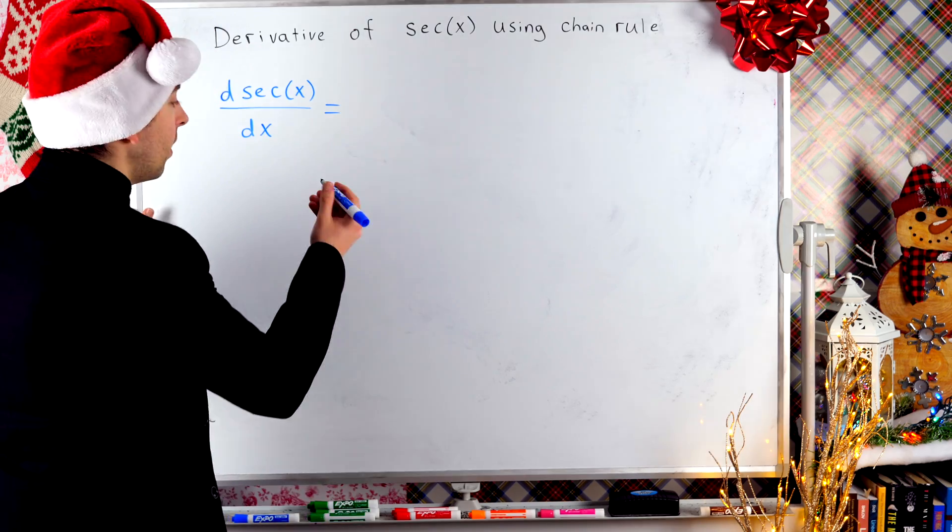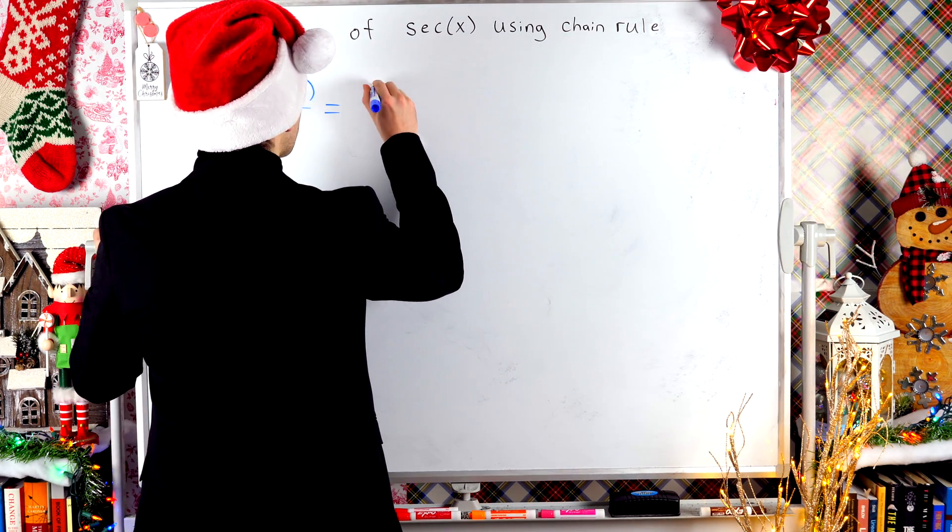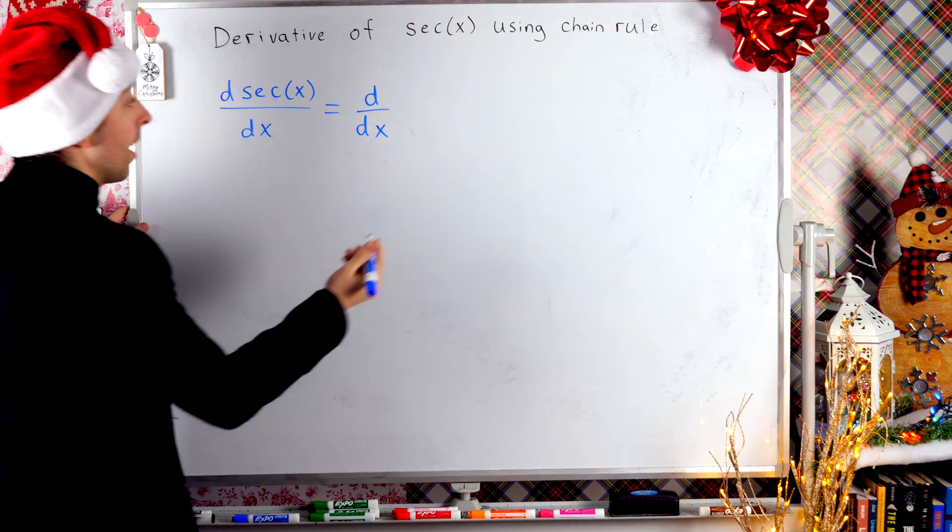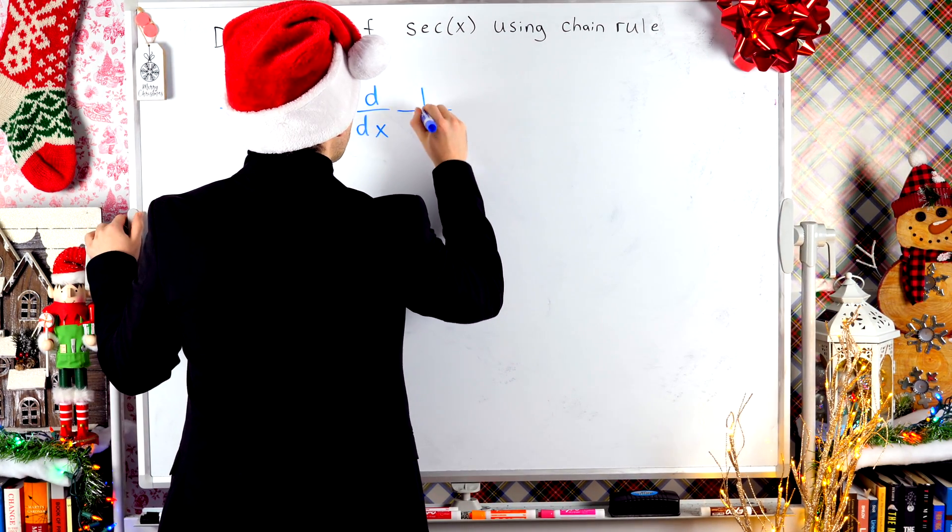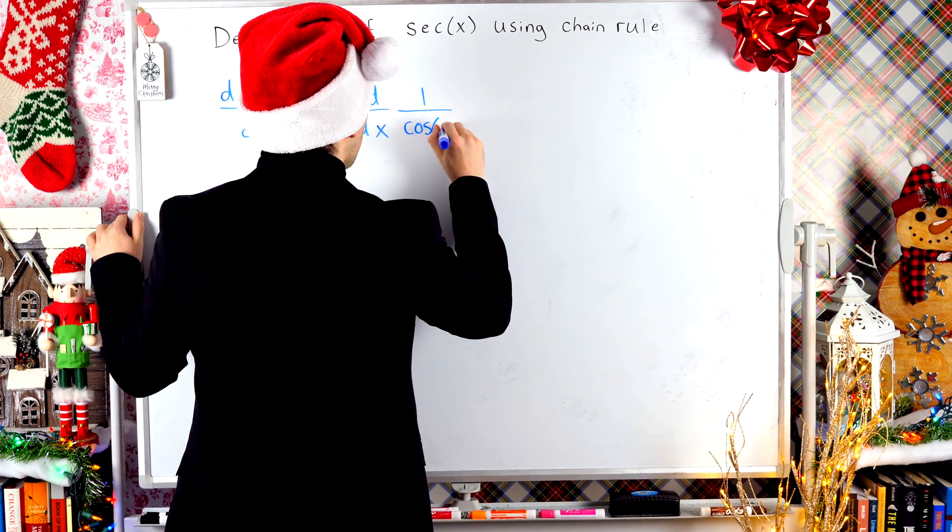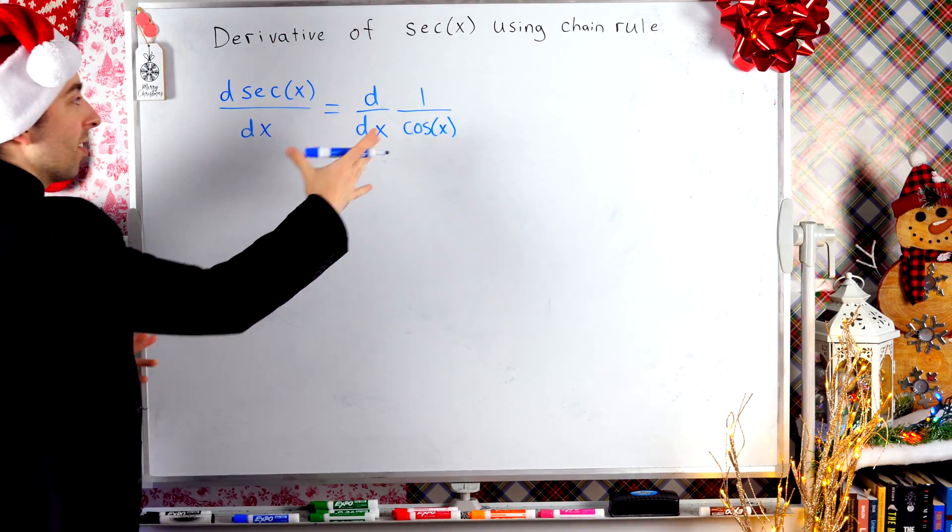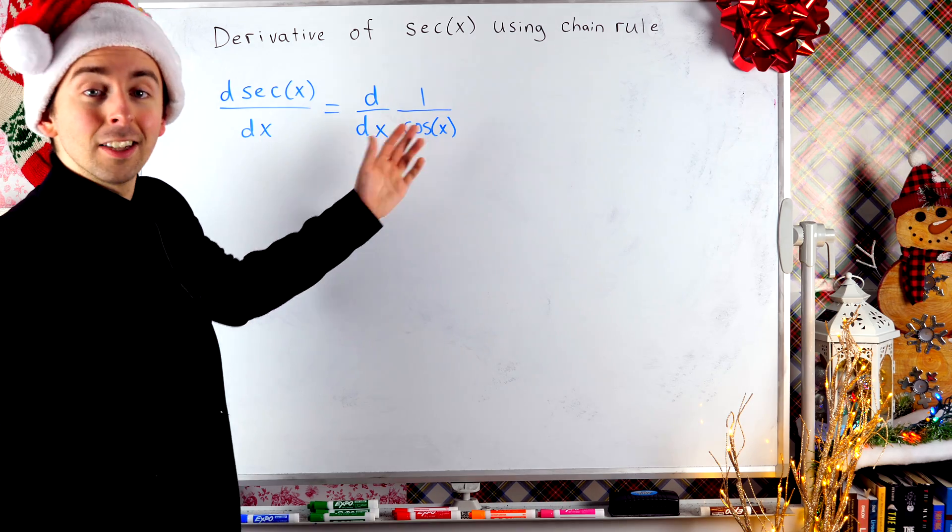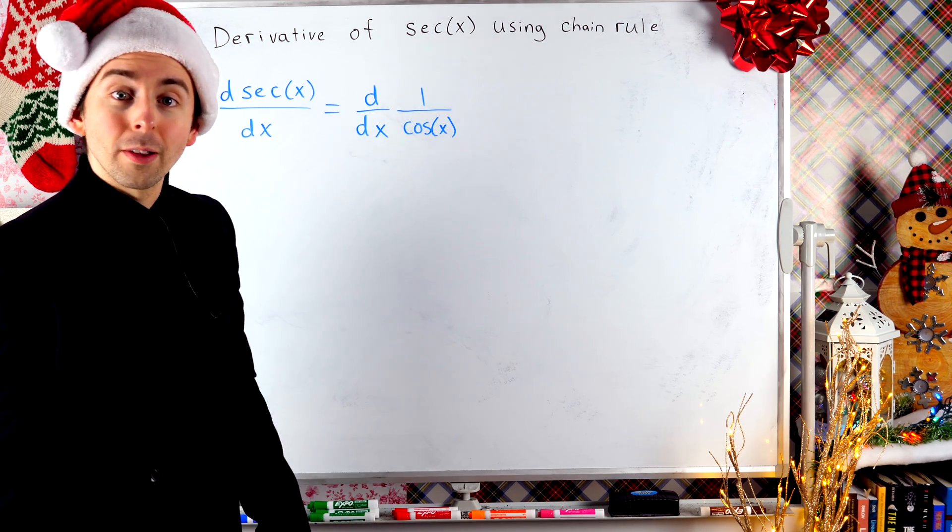By definition, secant is the reciprocal of cosine, so the derivative of secant is the same as the derivative of one over cosine, just like that. Again, secant is this, so no funny business going on so far.